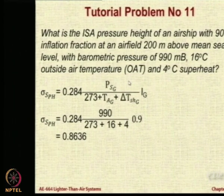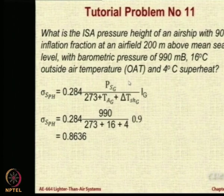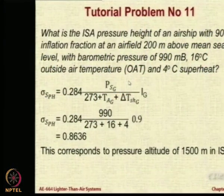Now we have to look at the atmospheric tables and find out at what altitude the density ratio equals 0.8636. Does anybody have any textbook which contains the atmospheric ratios? If not, I will tell you that this corresponds to 1500 meters under ISA conditions.